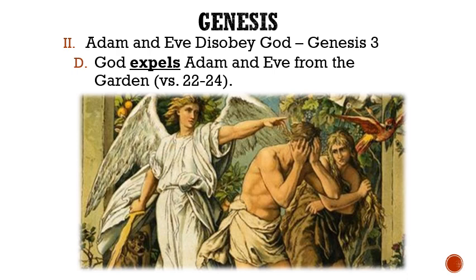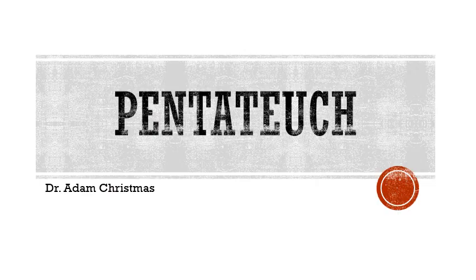And finally, letter D: God expels Adam and Eve from the garden. To keep Adam and Eve from partaking of the tree of life, God expelled them and placed a cherubim with a flaming sword to guard the tree. I believe this was for their protection, since eternal physical life in a decaying body would be horrific if they were to re-enter the garden and eat of the tree of life. And that brings us to the end of lecture two, where we covered part one of the book of Genesis.